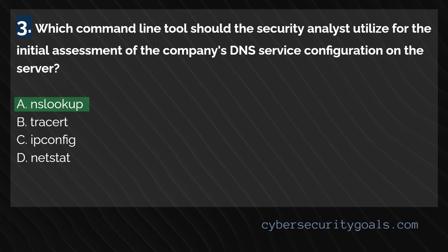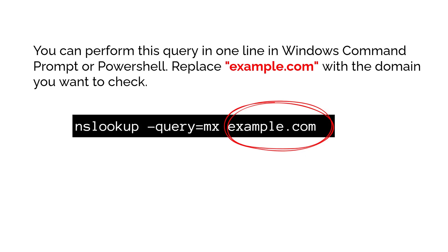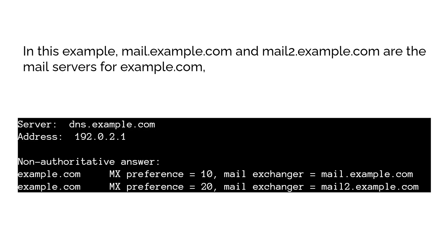Let's go over an example of how to check the MX record of a domain using NSLOOKUP in Windows. First, open command prompt or PowerShell. Then with just one command, type the following: nslookup -query=MX example.com. In this example, mail.example.com and mailto.example.com are the mail servers for example.com. Hopefully that's what the mail server should be — if not, then I've identified a DNS configuration error using the NSLOOKUP tool.